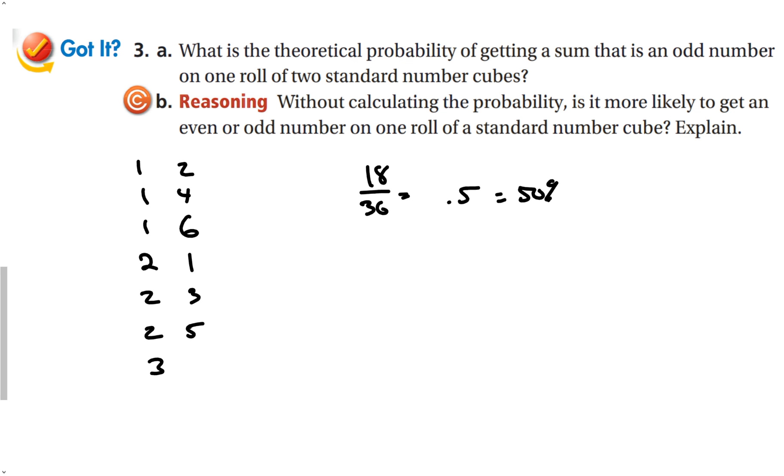Without calculating the probability, is it more likely to get an even or an odd number on one roll of a standard number cube? Think about it. There are 3 even numbers: 2, 4, and 6. There are 3 odd numbers: 1, 3, and 5. So it is neither more likely or less likely.